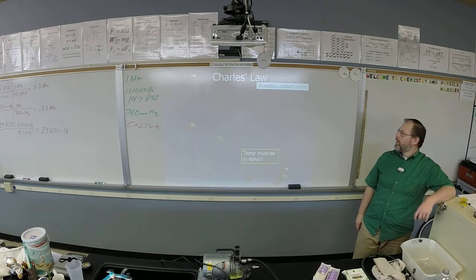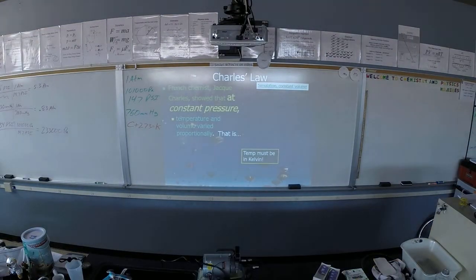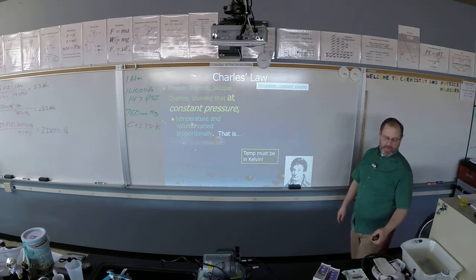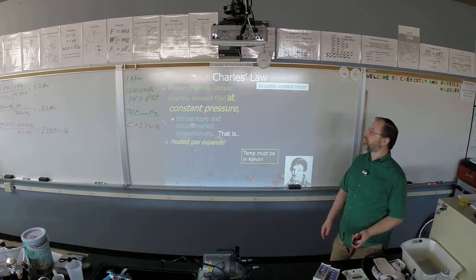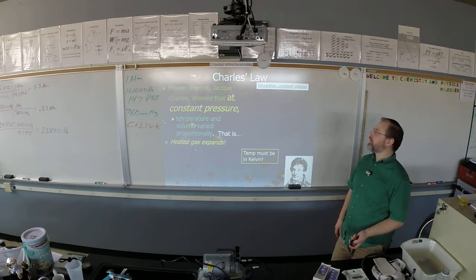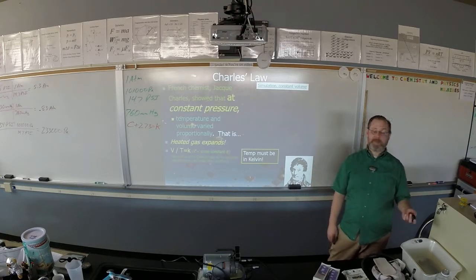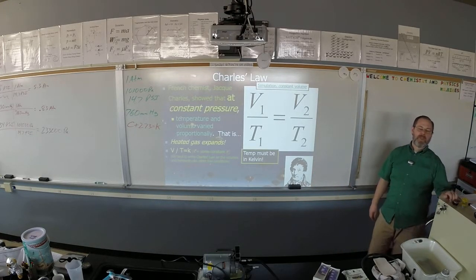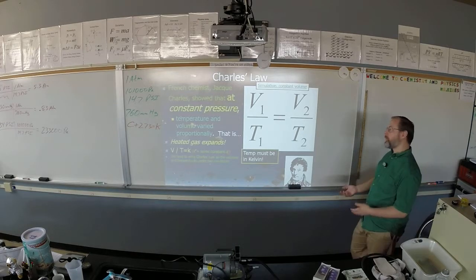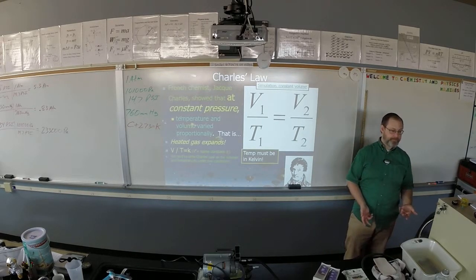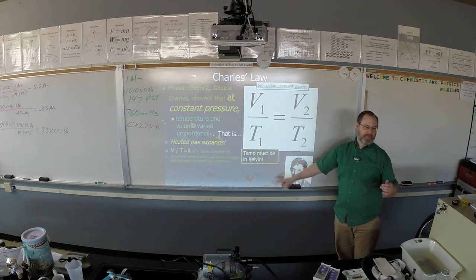Charles's Law expresses what happens to the volume of a gas when it changes pressure. We usually show Charles's Law as a relationship between the volume and temperature of gas at one situation and the volume and temperature of a gas at another situation. V1 over T1 equals V2 over T2. But again, temperature must be in Kelvin.